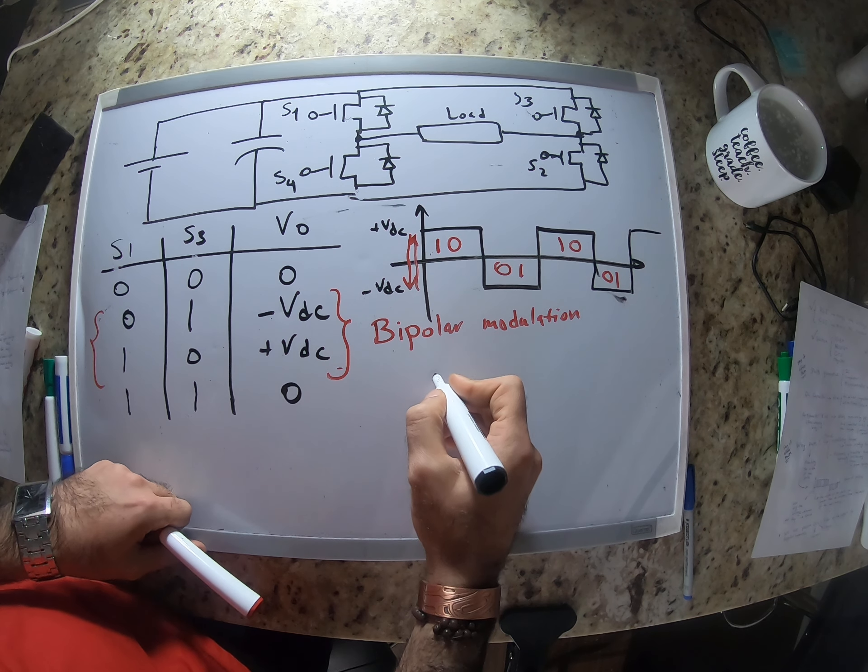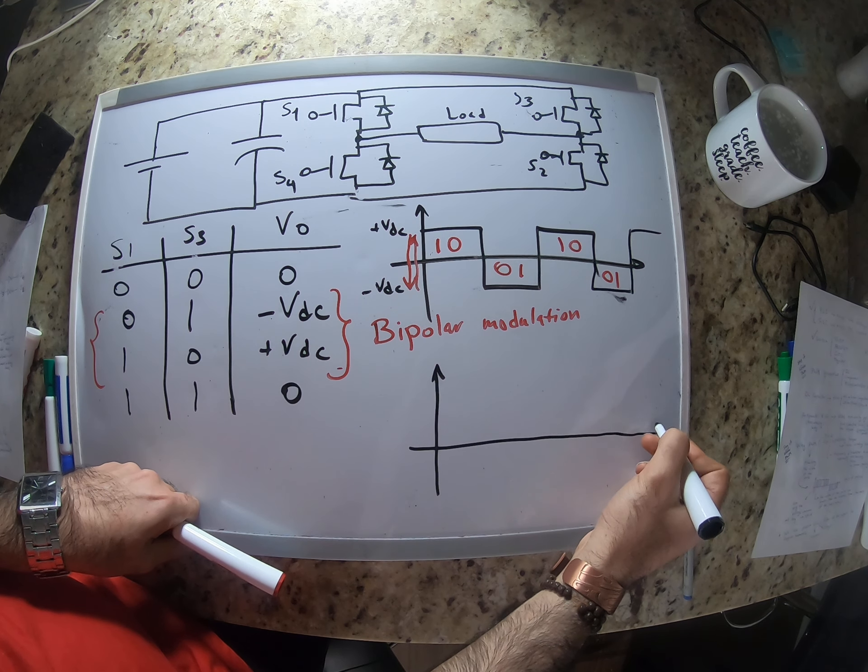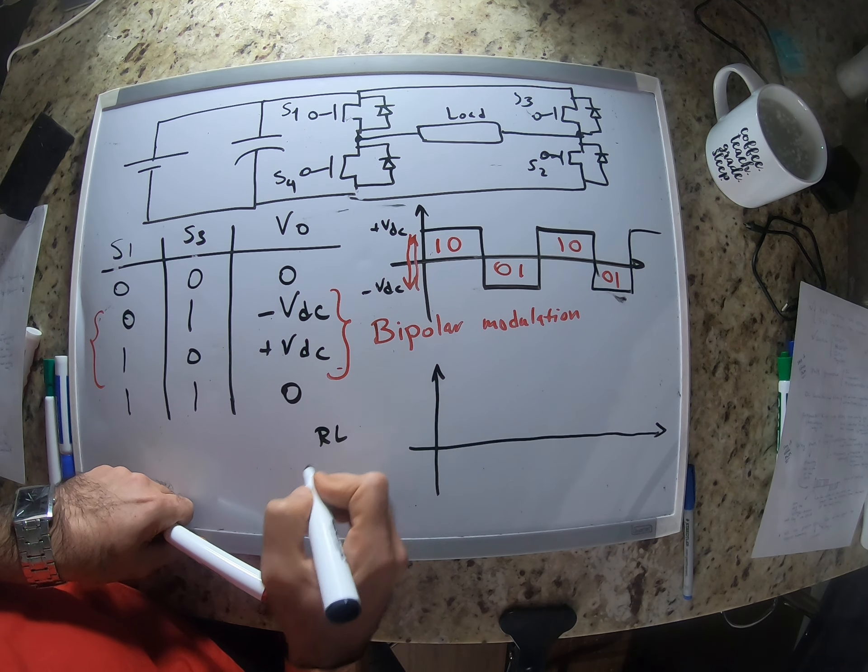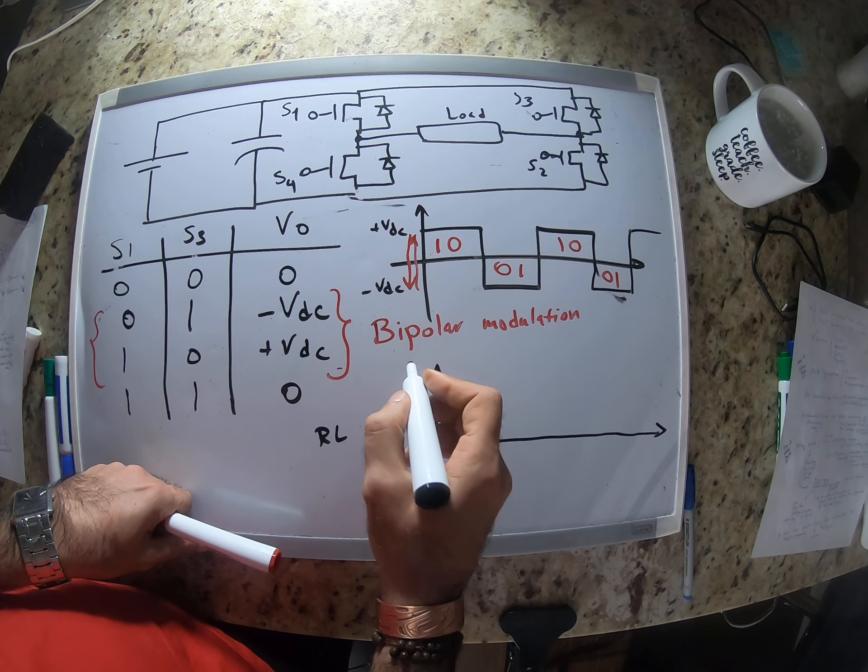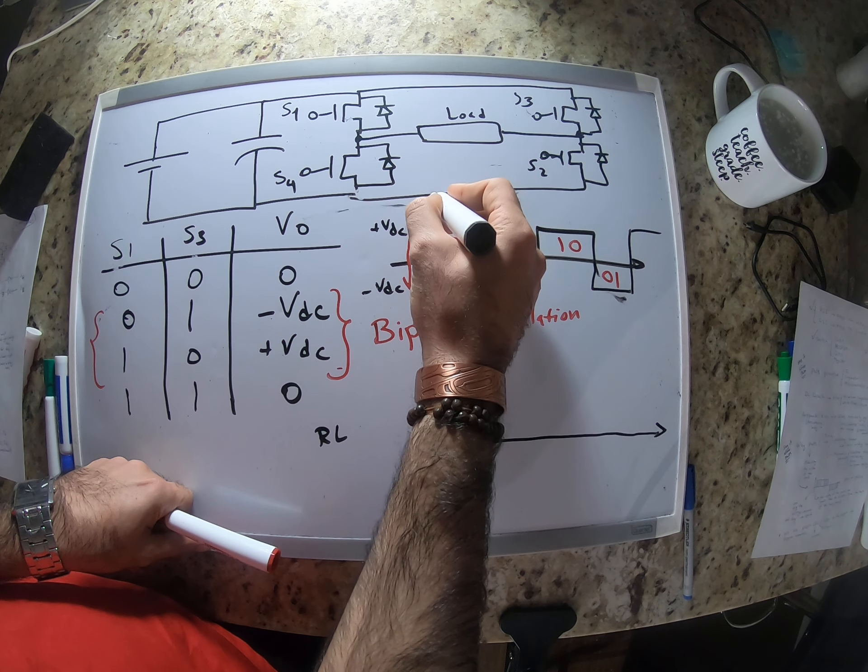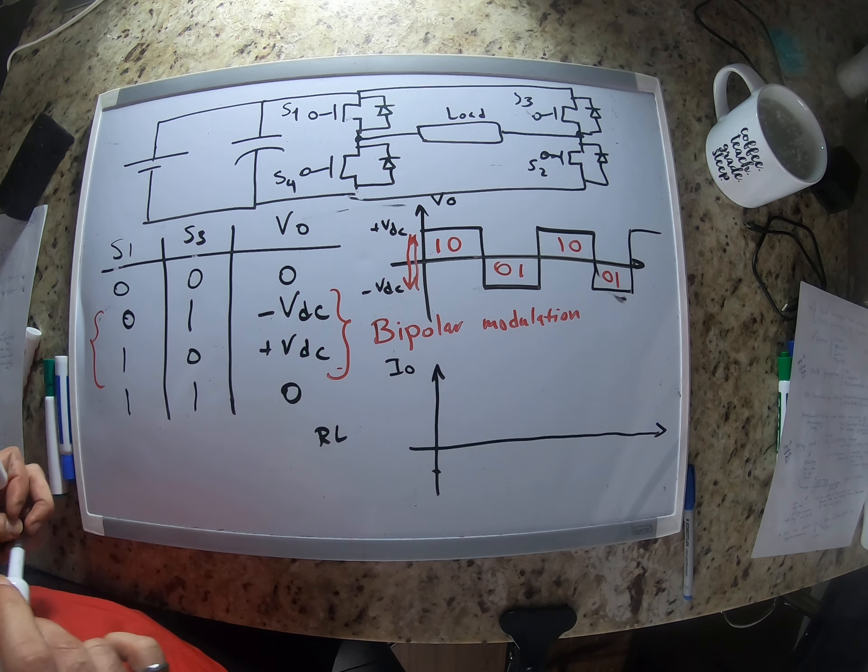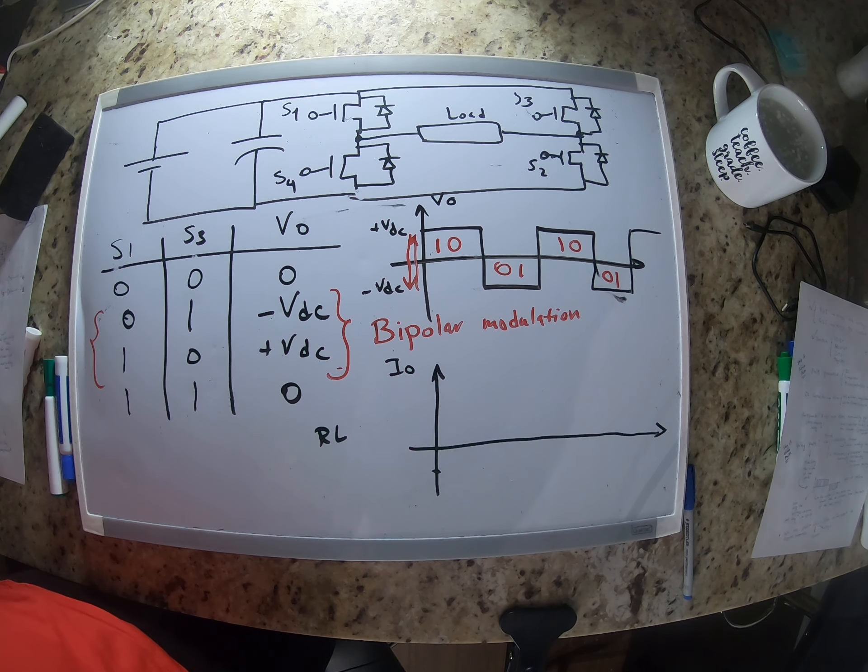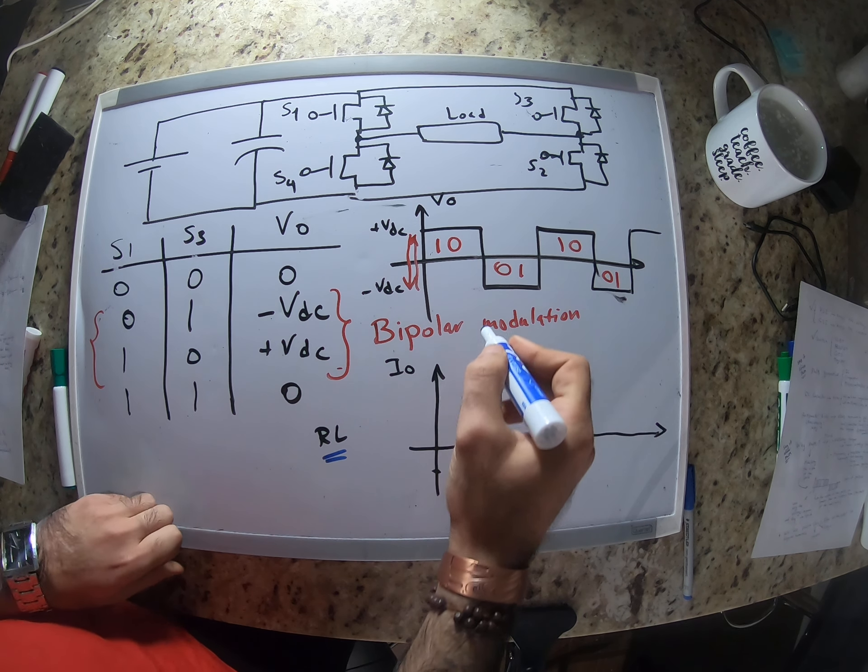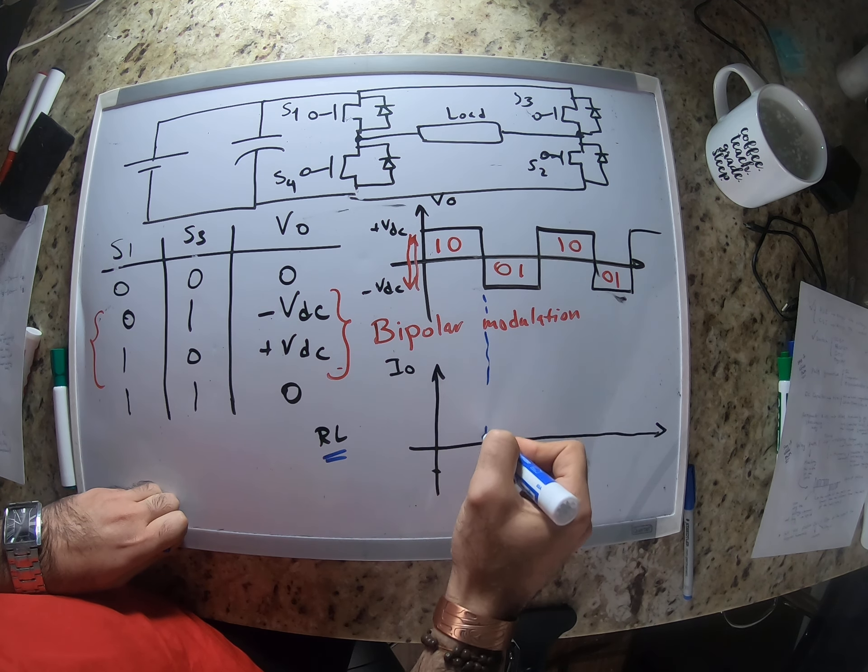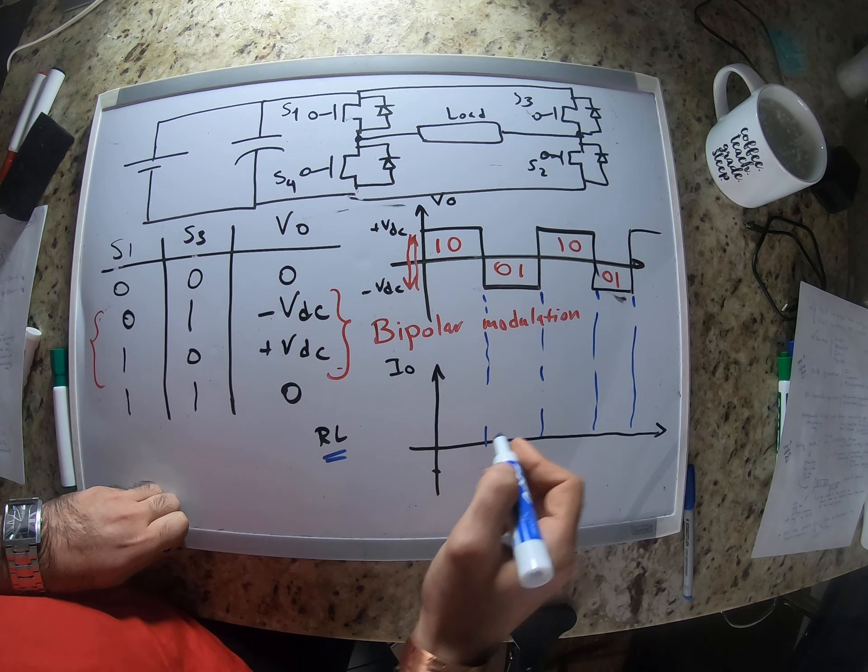let's assume that we have an RL load. This is voltage and I want to draw current. Let's assume that we have an RL load.